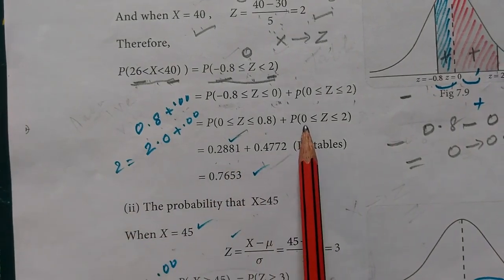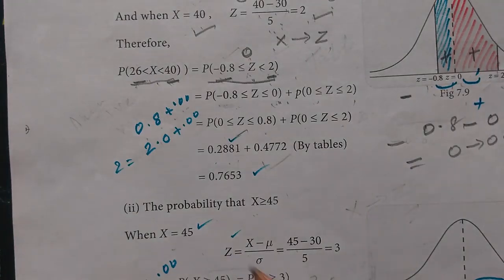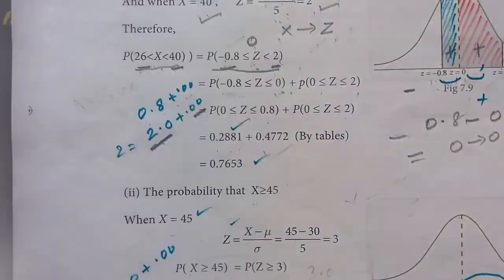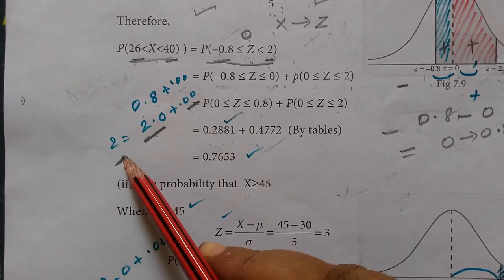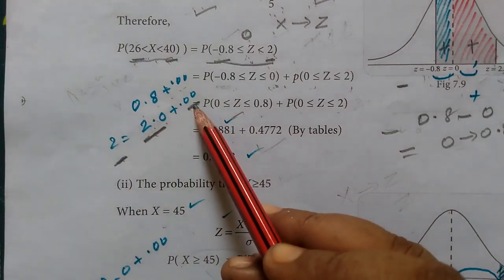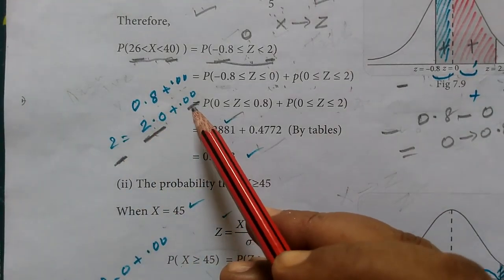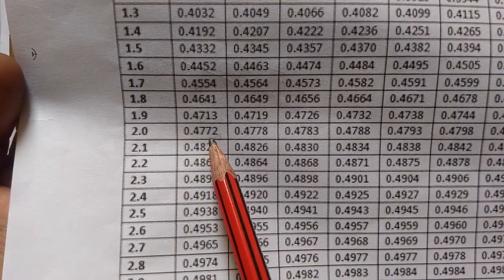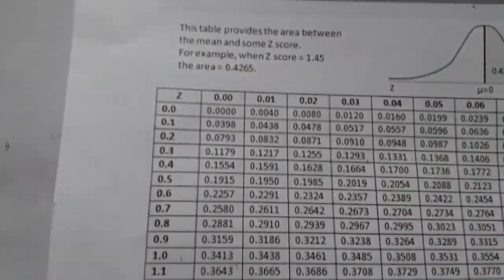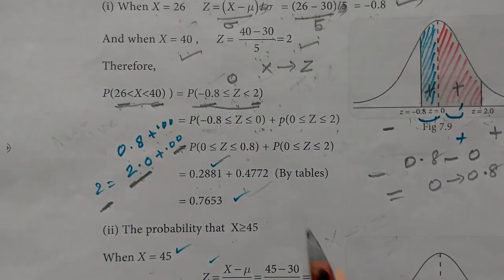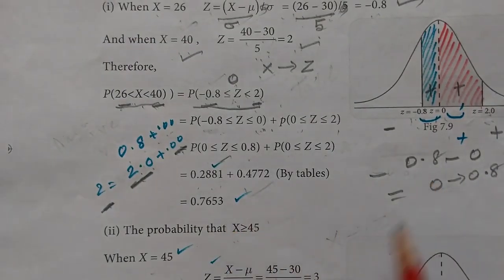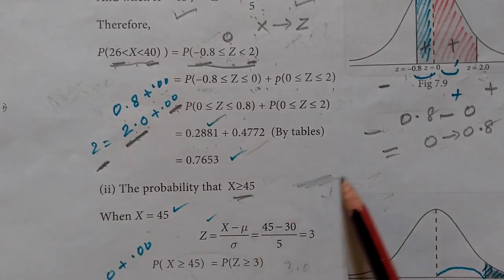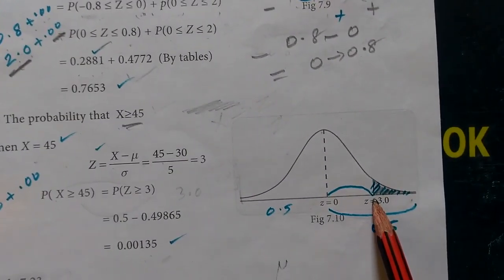Next, for Z equals 2.0, we look in the table at row 2.0 with column 0.00, which gives 0.4772. By tables, 0.2881 plus 0.4772 equals 0.7653.